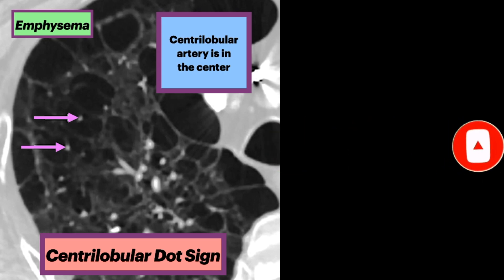The central dot is the centrolobular artery, often identified within focal areas of centrolobular emphysema. This helps differentiate emphysema from true cystic lung disease.